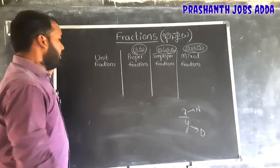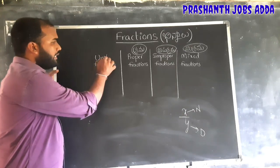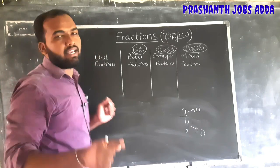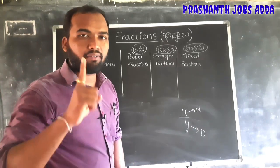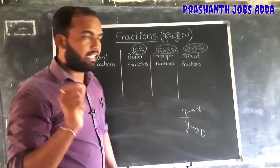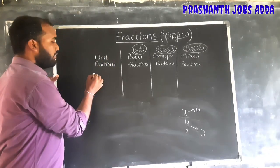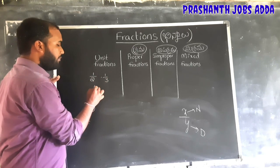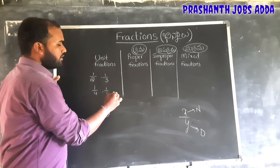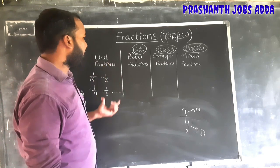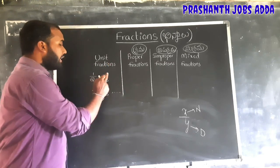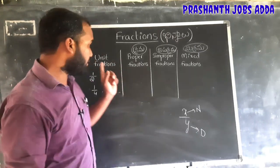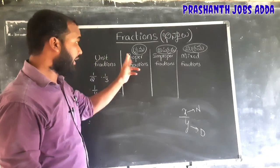Unit fractions — the numerator is always 1. A fraction where the numerator is 1 is called a unit fraction. For example: 1 by 2, 1 by 3, 1 by 4, 1 by 5, and so on. Any fraction with numerator 1 is a unit fraction.